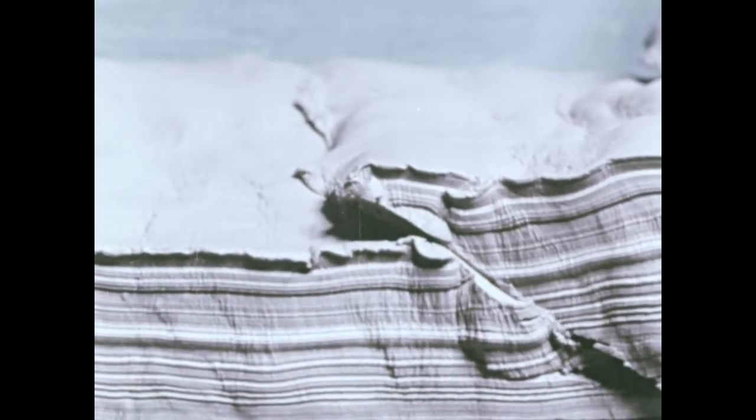As this folding occurs, cracks appear in the rocky crust, sometimes breaking it down into huge blocks. Where blocks of earth move along these cracks, the cracks are called faults.